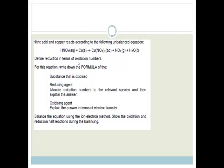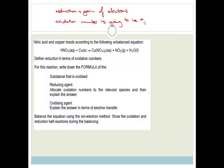It says define reduction in terms of oxidation numbers. Reduction is the gain of electrons. What that means is that the oxidation number is going to be reduced — it becomes more negative, because electrons are negative. So reduction is when the oxidation number is reduced.